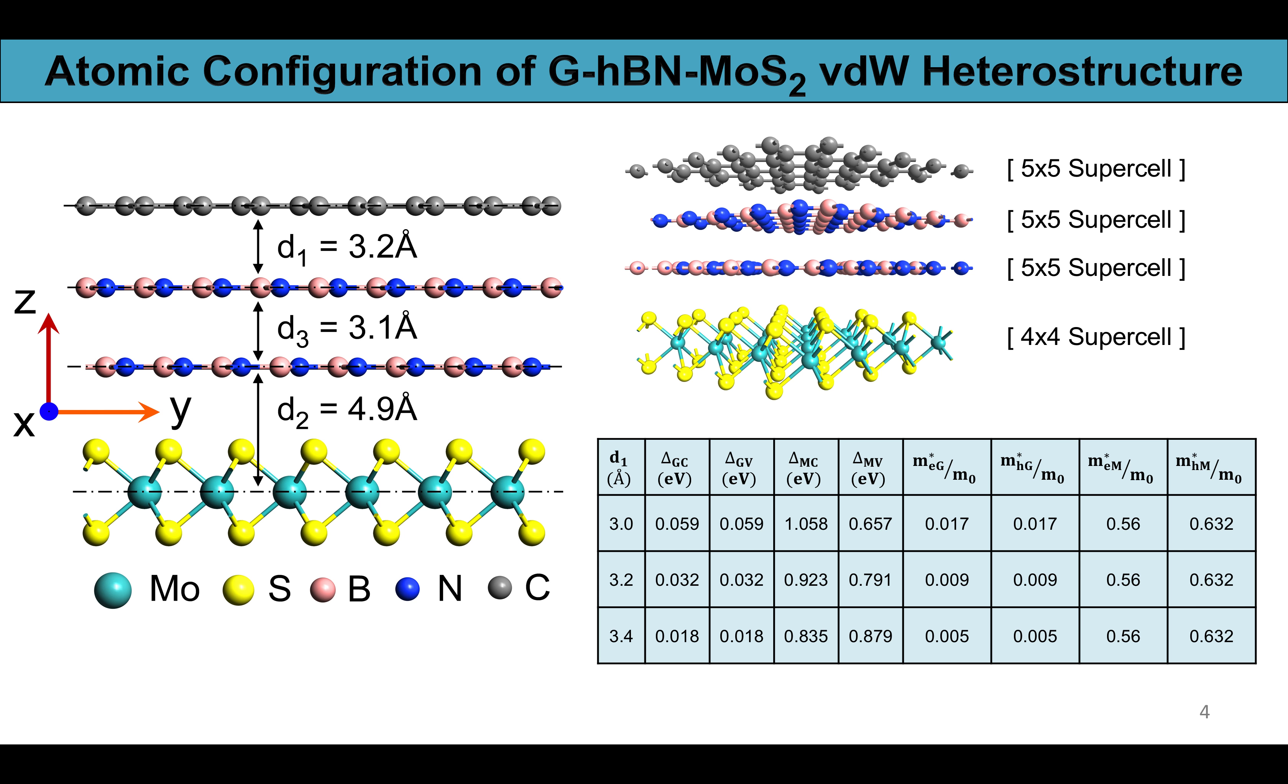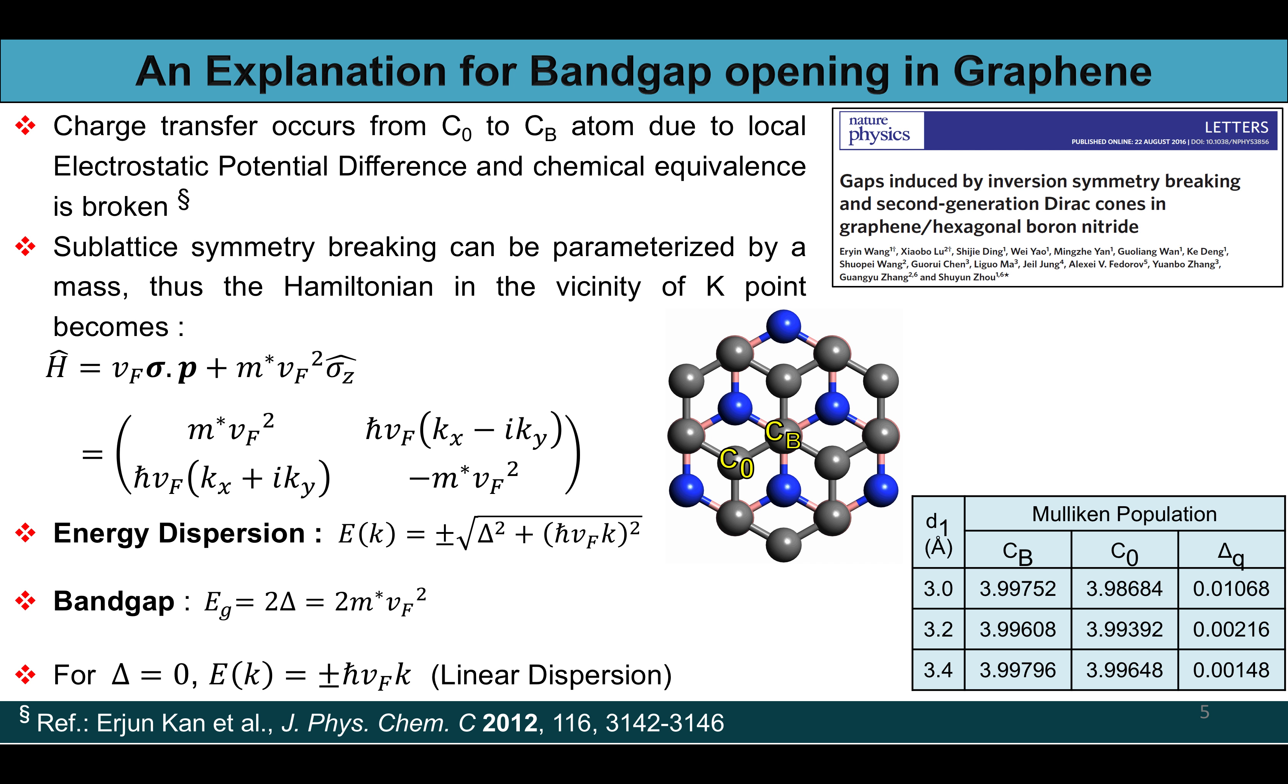Now our model is generic in nature and it encompasses many subtle and intricate atomic level phenomena out of which the bandgap opening in graphene is most crucial that dictates the transistor performance. When graphene is placed on top of hBN in Bernal stacking order then due to this stacking pattern the on-site energies of CB and C0 atoms become different and a net charge transfer occurs from C0 to CB atom, and thus the chemical equivalence of the carbon lattice site is broken.